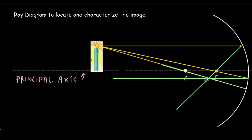Those three reflected rays meet at a point. If we place a screen right there, the bright point from the candle would show up there. The bottom of the candle is along the principal axis, so it will pass through C and reflect straight back, meaning the bottom of the candle stays along the principal axis. So our candle image shows up with the flame and candle located at that intersection point.